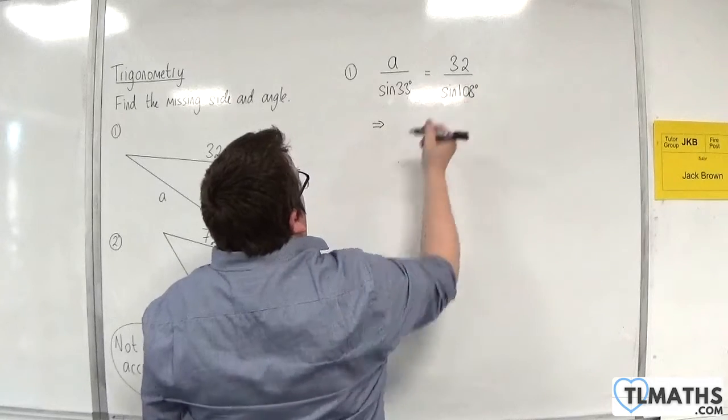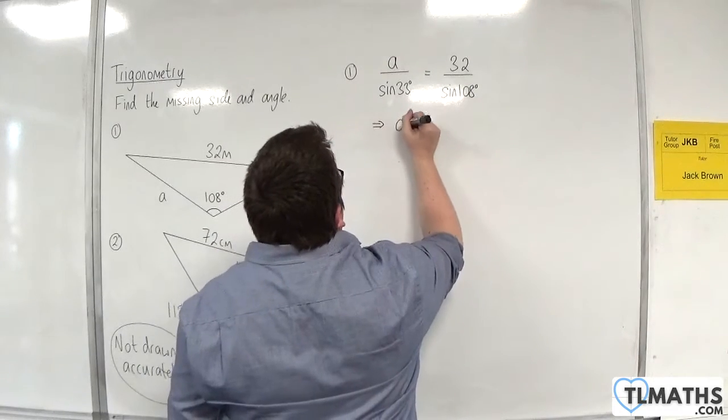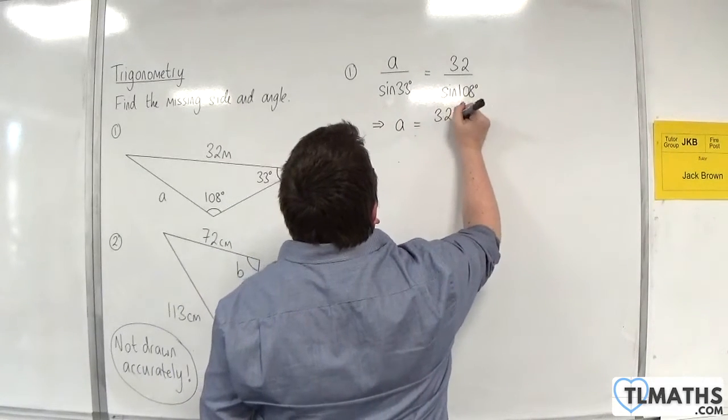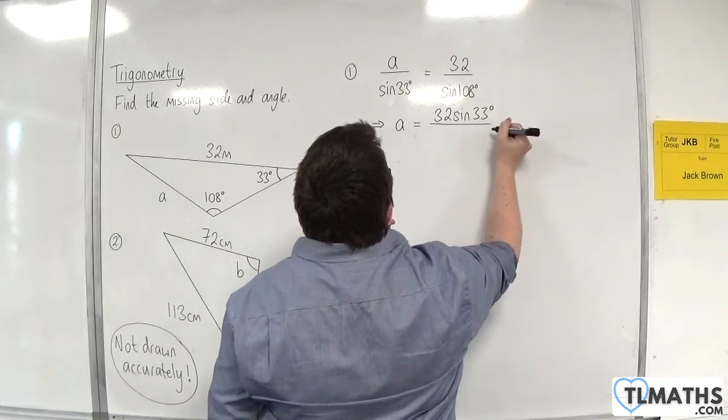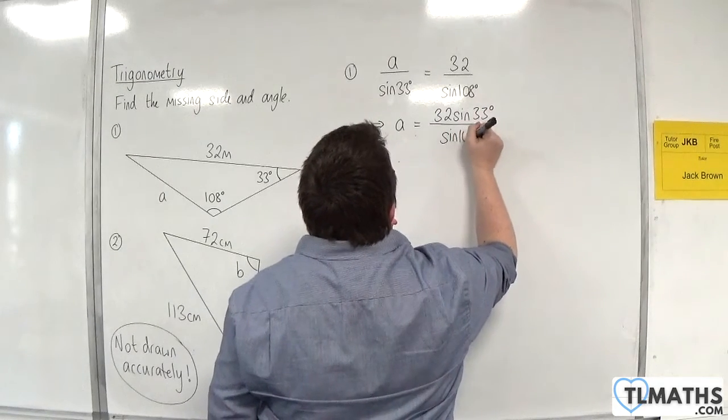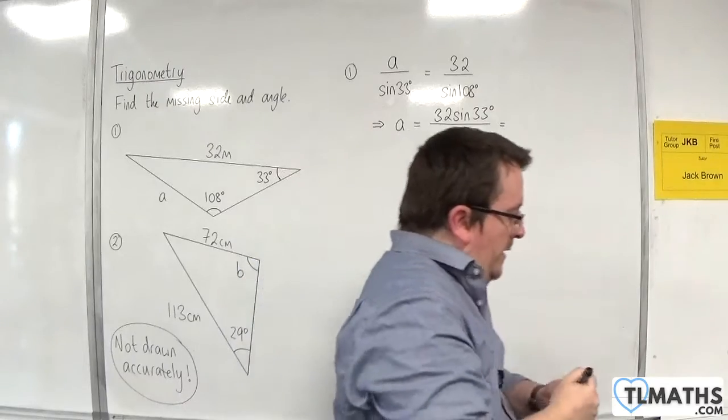Then I can multiply by the sine of 33. So a will be equal to 32 sine of 33 degrees over sine of 108 degrees.